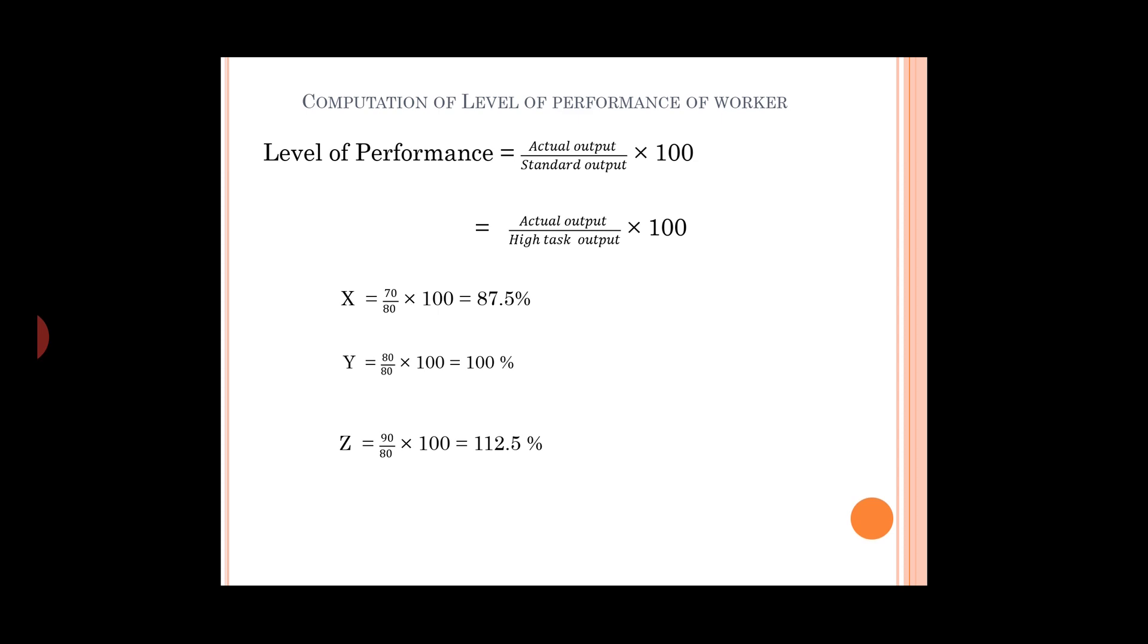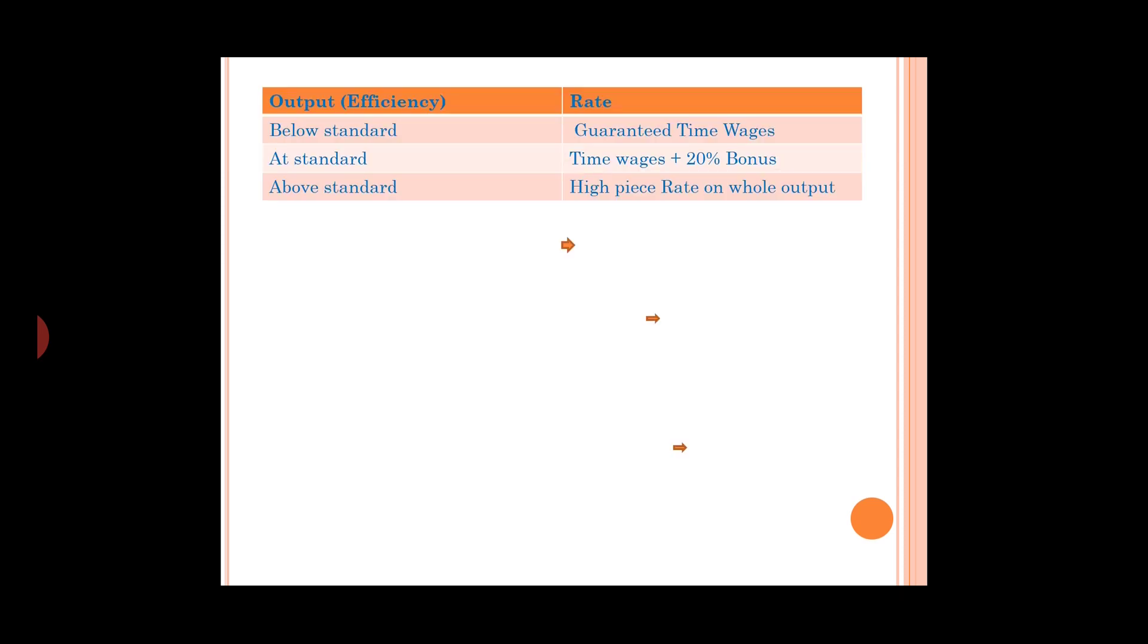X is below standard, Y is at standard, Z is above standard. Output efficiency rate: below standard gets time wages, at standard gets time wages plus 20% bonus, above standard gets high pace rate.